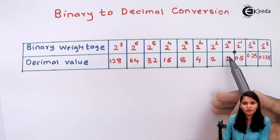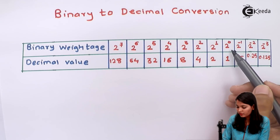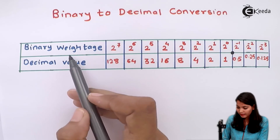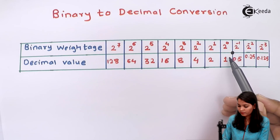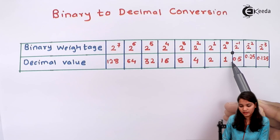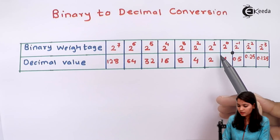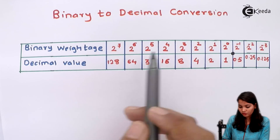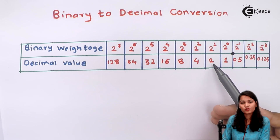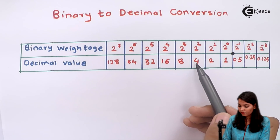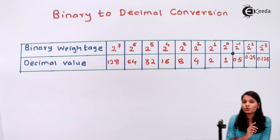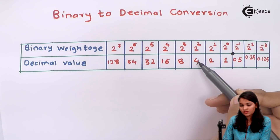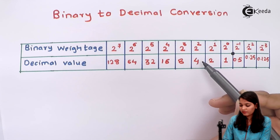Let's start from 2 raised to 0. Anything raised to 0 is 1, so 2 raised to 0 gives a decimal value of 1. Also, 2 raised to 1 is 2, so the decimal value is 2. Now 2 raised to 2 gives us 4, so the decimal value is 4.